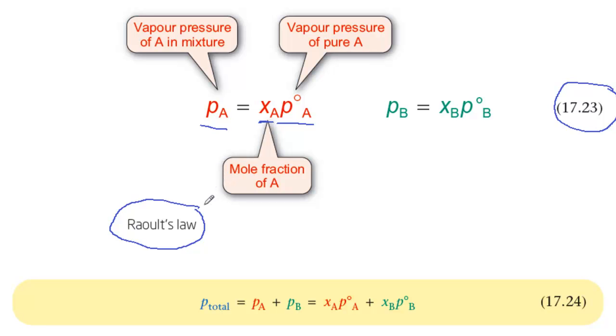For example, if the mole fraction of A is 0.5, only half the molecules in the liquid mixture are A, and the vapor pressure of A is 0.5 times its value when pure.